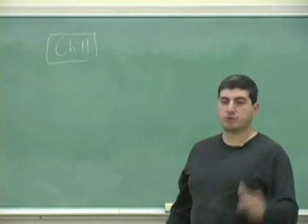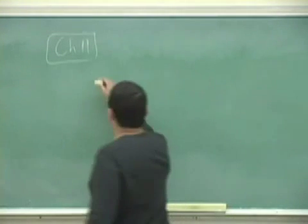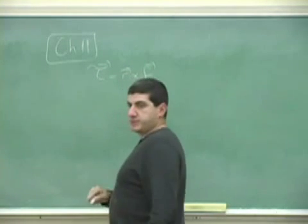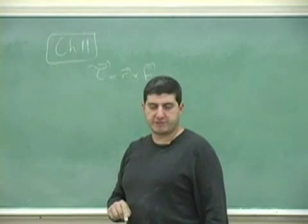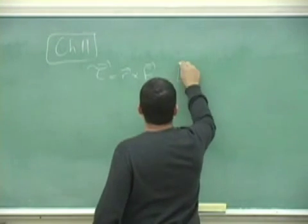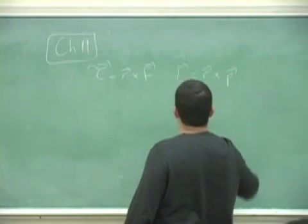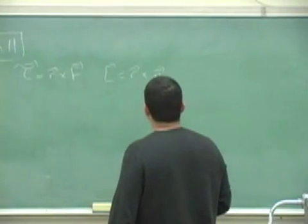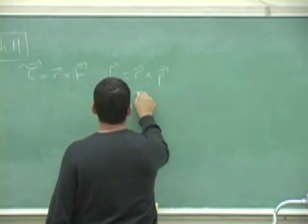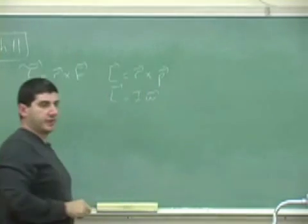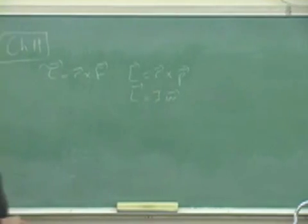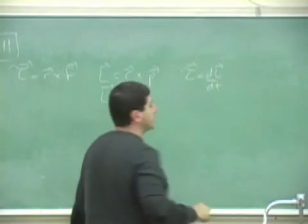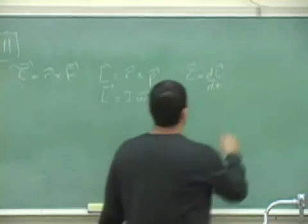Chapter 11 introduces the formal definition of torque — r crossed into F. It also introduces the formal definition of angular momentum, L equals r crossed into p. And it introduces the other equation for angular momentum, L equals I omega. It also introduces the equation torque equals dL/dt, which is the rotational counterpart of F equals dP/dt.